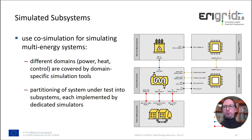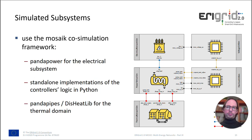The benchmark uses co-simulation for simulating the multi-energy system, using domain-specific simulation tools for the different domains — in our case power, heat, and control. By partitioning the system under test into several subsystems, we can implement each subsystem with a dedicated simulator. We use the MOSAIC co-simulation framework, which uses PandaPower for the electrical subsystem, and standalone implementations in Python for the controllers.